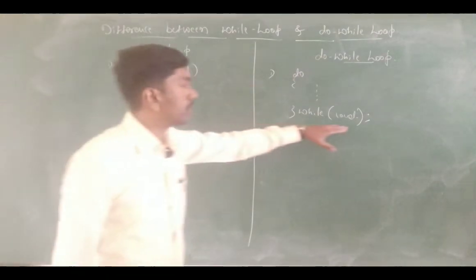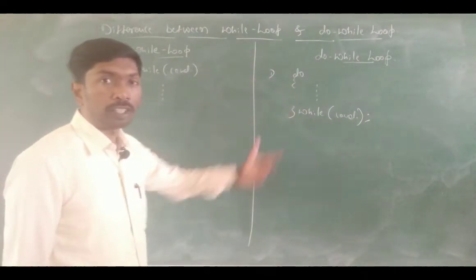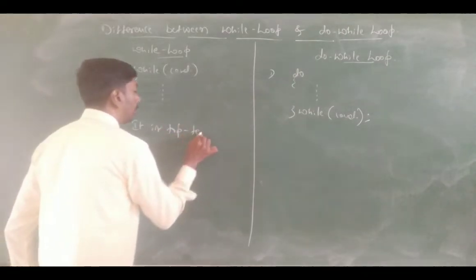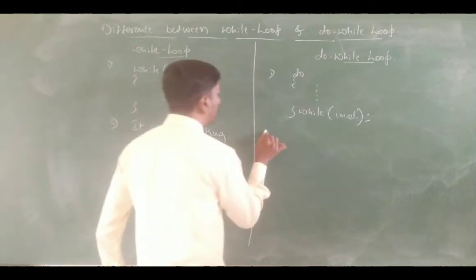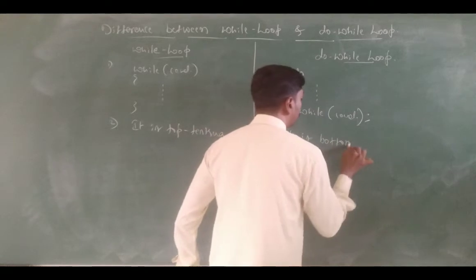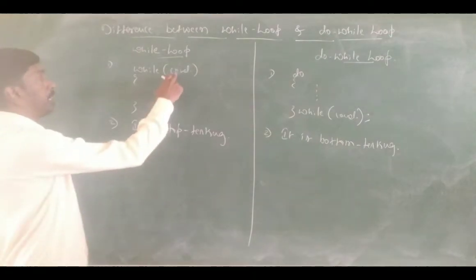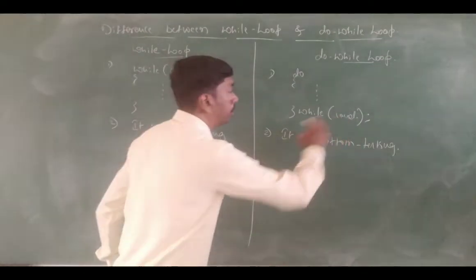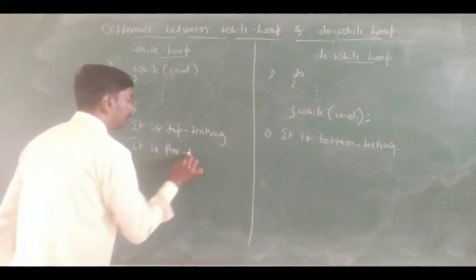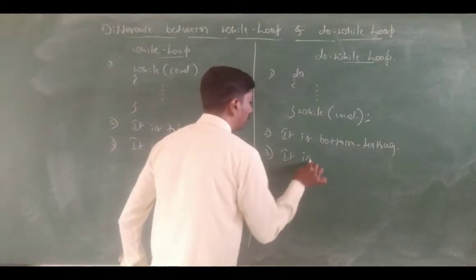This is called top testing, and the do while loop is called bottom testing. This is the main difference. While loop is top testing — it is also called pretesting. Do while loop is bottom testing — it is also called post testing.